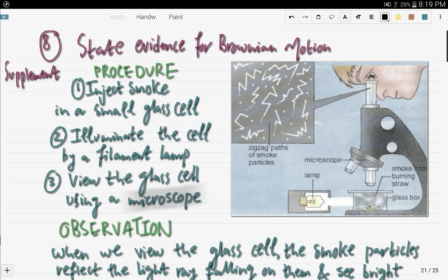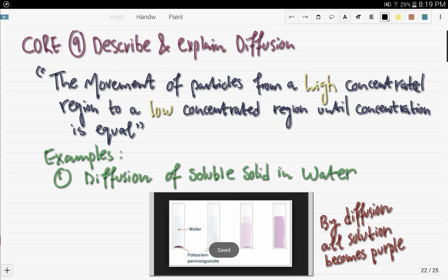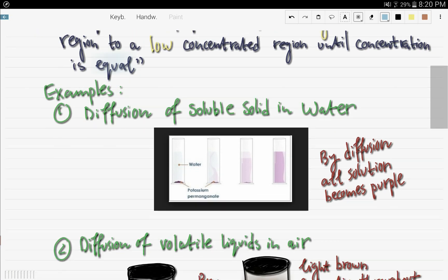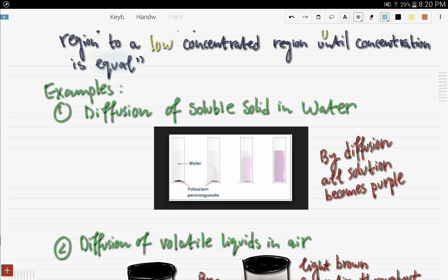So now let's go to objective number nine. So objective number nine is core, and it is describe and explain diffusion. So the movement of particles from a high concentrated region to a low concentrated region until the concentration is equal. So it's a pretty easy concept to understand. High concentration to low concentration until concentration is equal.